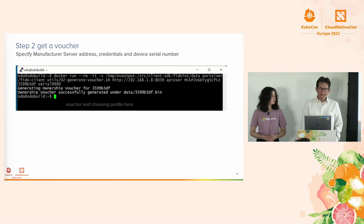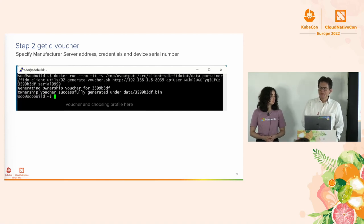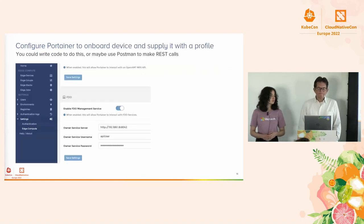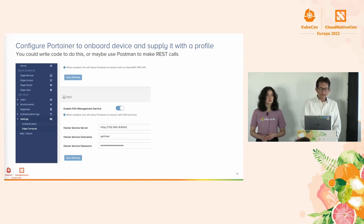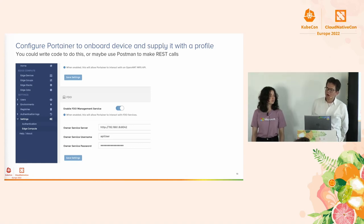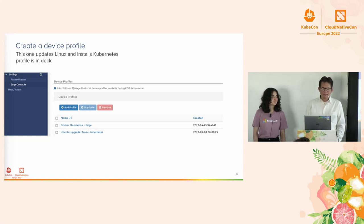Moving to screenshots in the interest of time — the process for getting a voucher is pretty quick. You can look at the one-liner using a Docker container. This doesn't have to be the device and shouldn't be the device; it's just you, the owner or manufacturer, pulling a voucher and sending it to the customer. If you're using Portainer, you can set this up to configure where the owner server is. You could also write your own code or use the Postman tool to call the REST APIs associated with these tools.